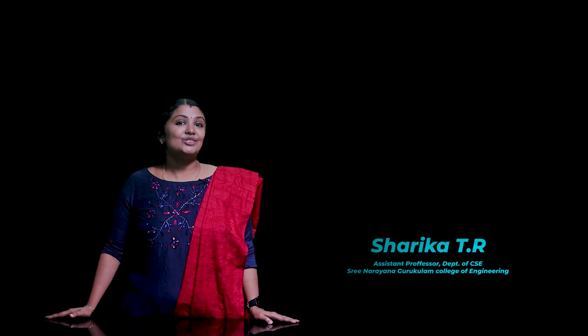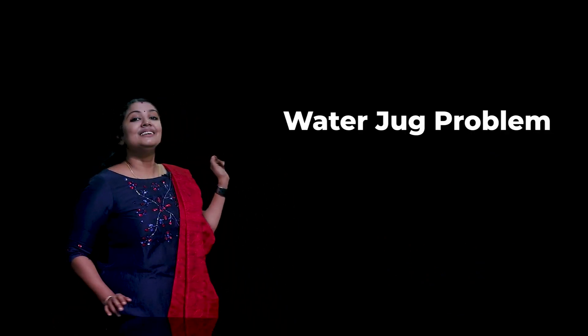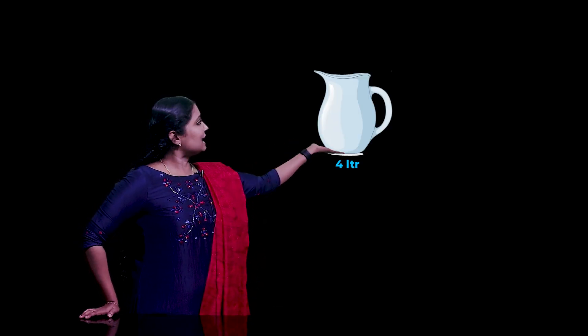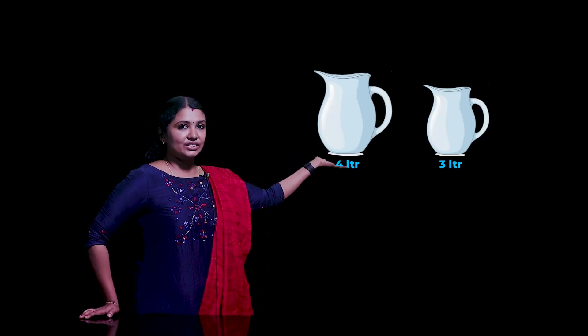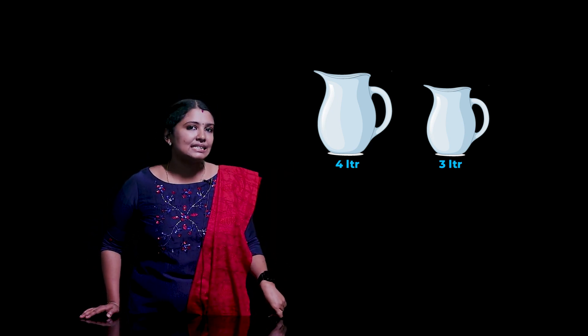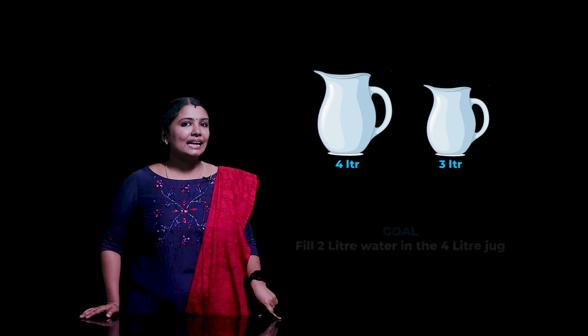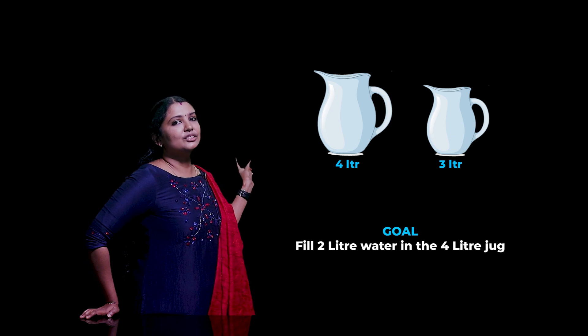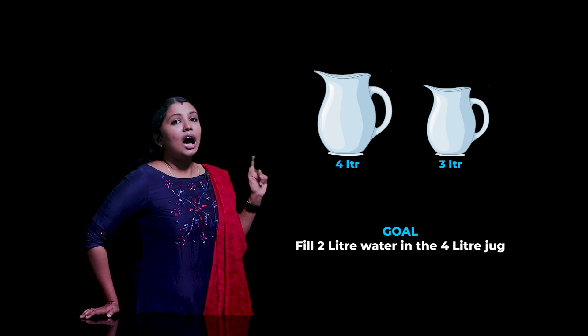Hello all, welcome to this video. Today we are going to learn about the water jug problem in artificial intelligence. Here I have one 4-liter jug and one 3-liter jug. Both these jugs have no markings and there are no measuring devices available. I need exactly 2 liters in this 4-liter jug. How to solve this?